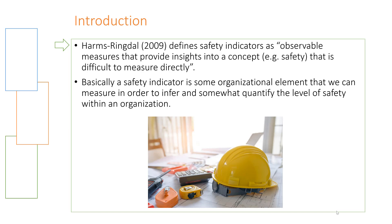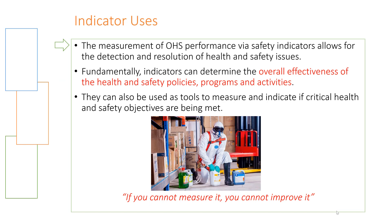We rely upon observable variables to identify or quantify, to some degree, what our latent variables are. Safety performance, or the state of health and safety of a company, is very difficult to observe directly, so we use safety performance indicators to infer the level of safety. Just like we can use a thermometer to measure the temperature of water, indicators can be used to take the temperature of a company, metaphorically, as it relates to how safe or not safe that company is.